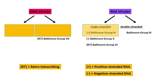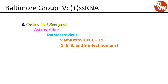Now the RNA viruses — starting with single-stranded positive sense, Baltimore Group 4. Order not assigned, family Astroviridae, genus mamastrovirus. Species mamastrovirus 1 through 19, with mamastrovirus 1, 6, 8, and 9 infecting humans.